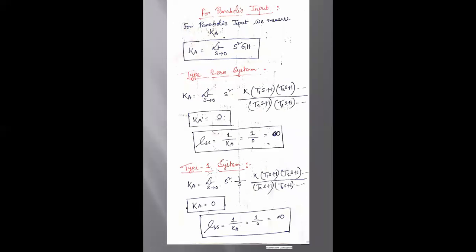Now we are applying a parabolic input. For the parabolic input, we concentrate on the acceleration error coefficient Ka equals limit s tends to 0 of s²·GH. For a type 0 system, Ka equals 0 and steady state error equals 1/Ka equals infinity. For a type 1 system, Ka also equals 0 and steady state error is infinity.